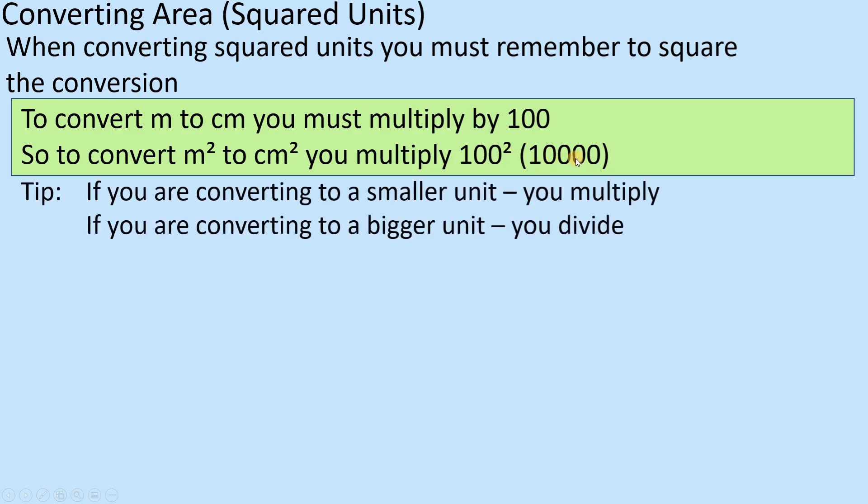A quick tip before we look at examples: understanding units is important. If you're converting to a smaller unit, then your number is going to get bigger, so you need to multiply. If you convert to a bigger unit, then your value must be smaller, so you need to divide.